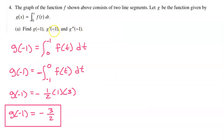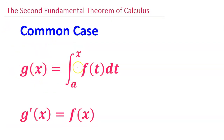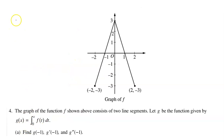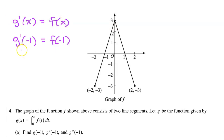Next we need to find g prime at negative one. To find the derivative of an integral defined function, we use the second fundamental theorem of calculus. For this problem, we will use the common case, where we have a constant for the lower limit of integration and simply x for the upper limit. According to the common case, the derivative will simply be f of x — we replace the placeholder variable t with the real variable x. So g prime will equal f of x, and g prime at negative one will just be f at negative one. Looking at the graph of f at x equals negative one, the value of the function is zero.